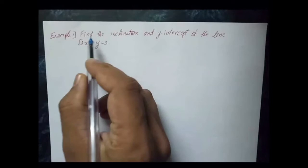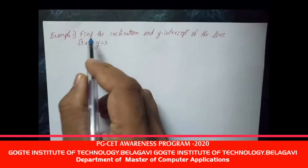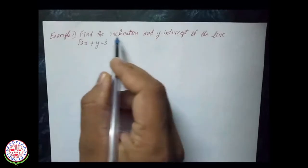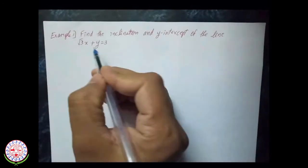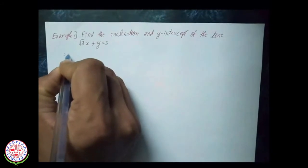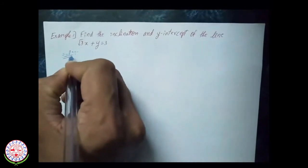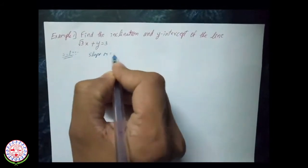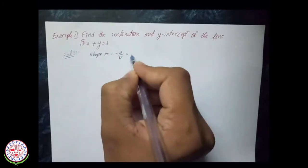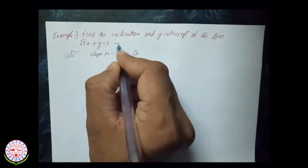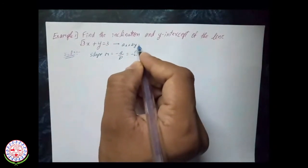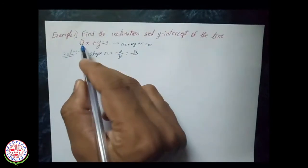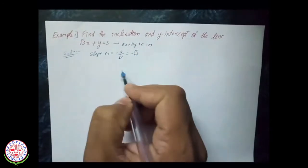The first question: find the inclination and y-intercept of the line √3x + y = 3. To simplify, compare this equation with ax + by + c = 0. The slope m is equal to −a/b, which is −√3. Here a is √3 and b is 1, therefore m = −√3.